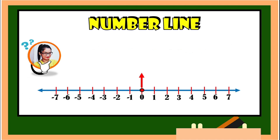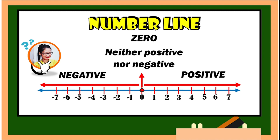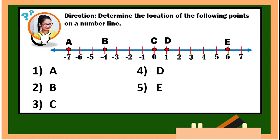A number line has zero, which is neither positive nor negative. Numbers to the right of zero are all positive, and numbers to the left of zero are all negative. So let us use this by answering this activity. From the given direction, we need to determine the location of the following points on a number line. As you observe, we have five different points: point A, point B, point C, point D, and point E.